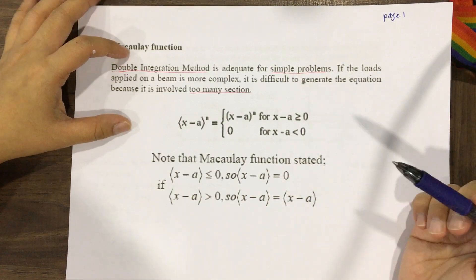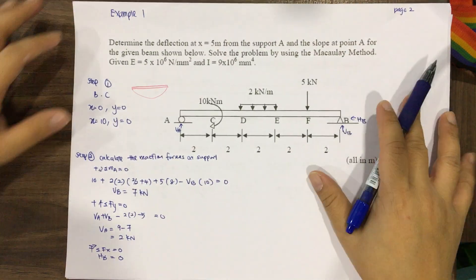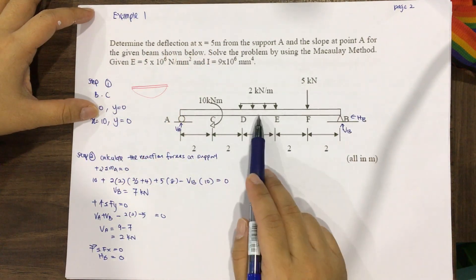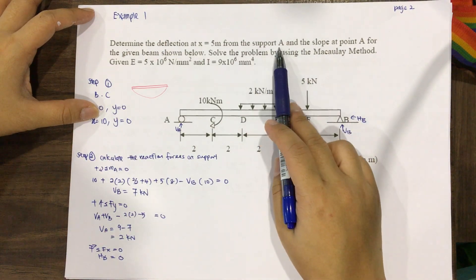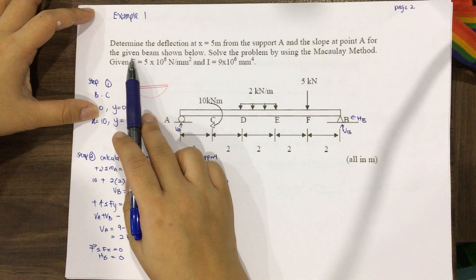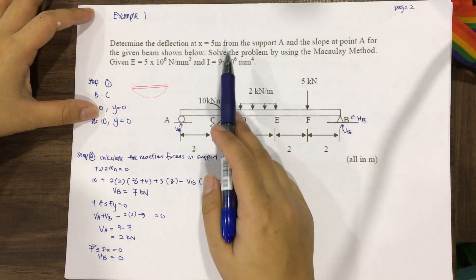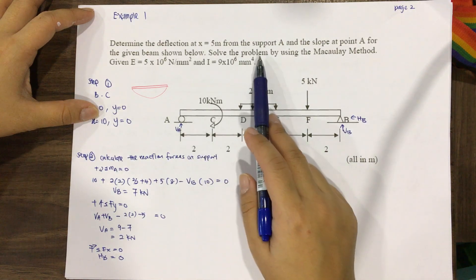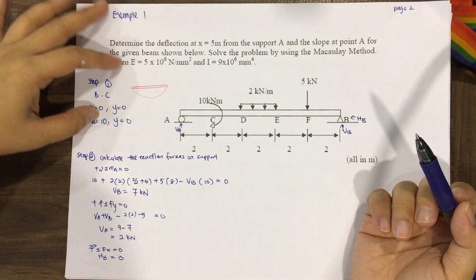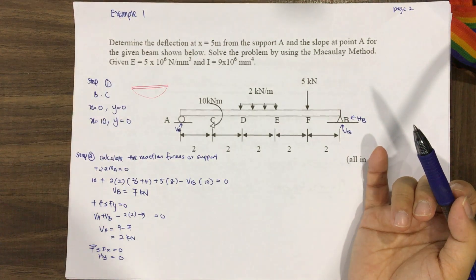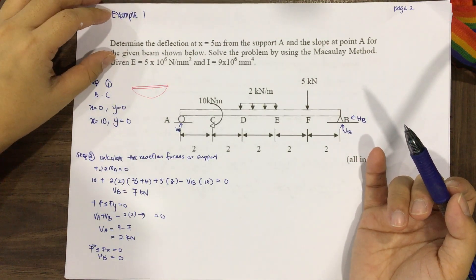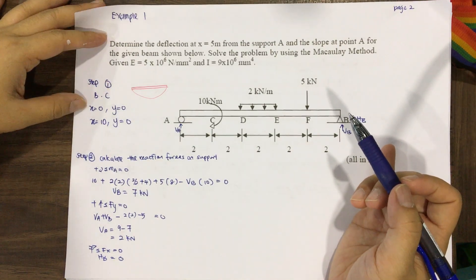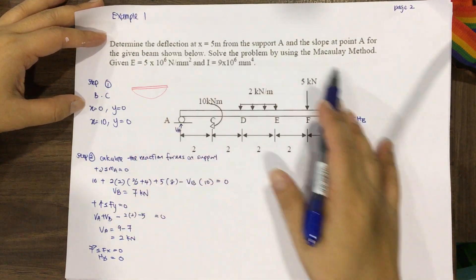For example number one, determine the deflection at x equal to 5 meters from support A and the slope at point A for the given beam. Solve using the Macaulay method given E equal to 5 times 10 to the power of 6 Newton per millimeter squared and I equal to 9 times 10 to the power of 6 millimeter to the power of 4.